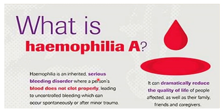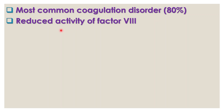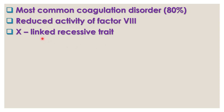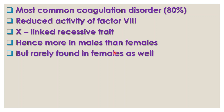Haemophilia A is an inherited serious bleeding disorder where a person's blood does not clot properly. It is the most common coagulation disorder, occurring in almost 80% of cases. In this disorder, there is reduced activity of Factor VIII. Haemophilia A is an X-linked recessive trait and hence is more prevalent in males than in females, though it is also found rarely in females if both parents have Haemophilia or if the mother is a carrier.